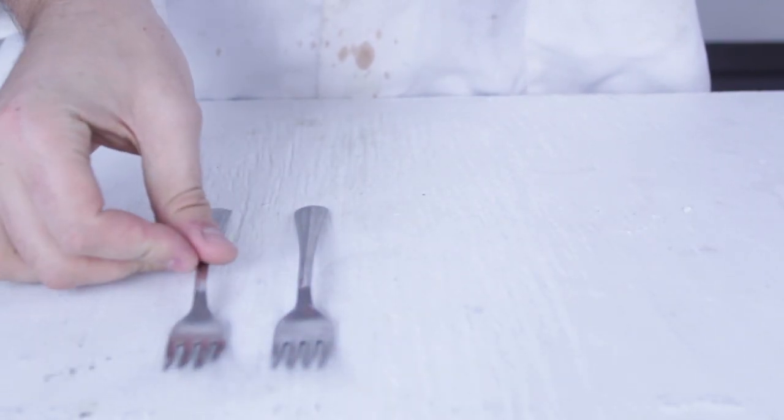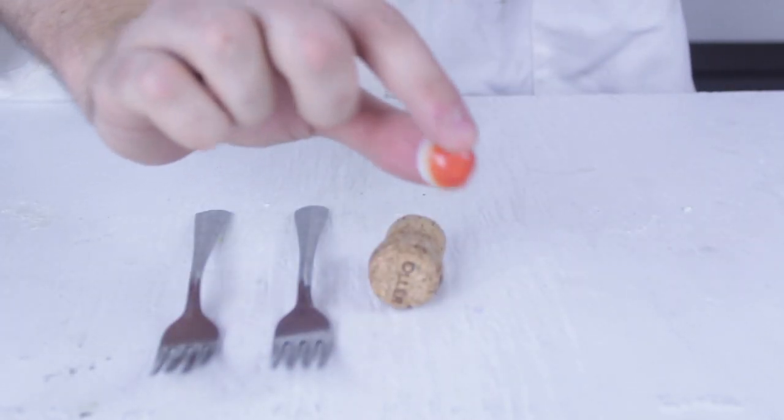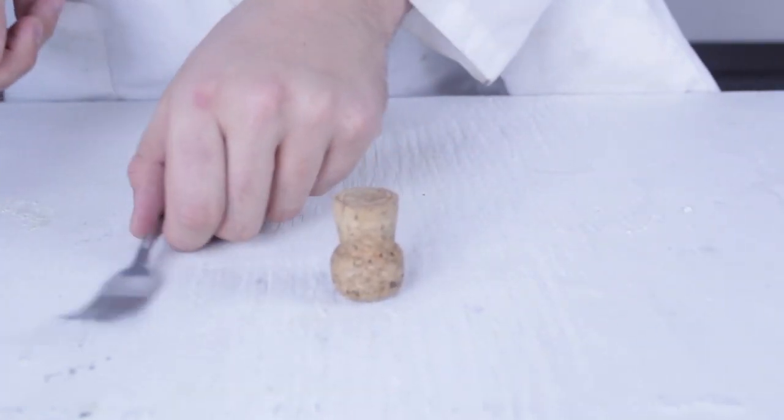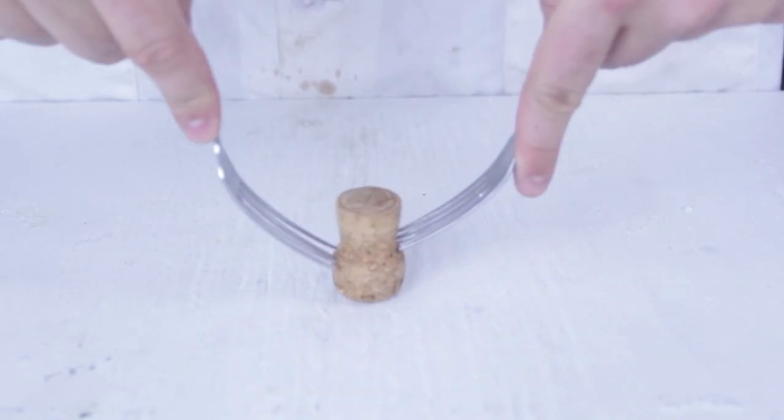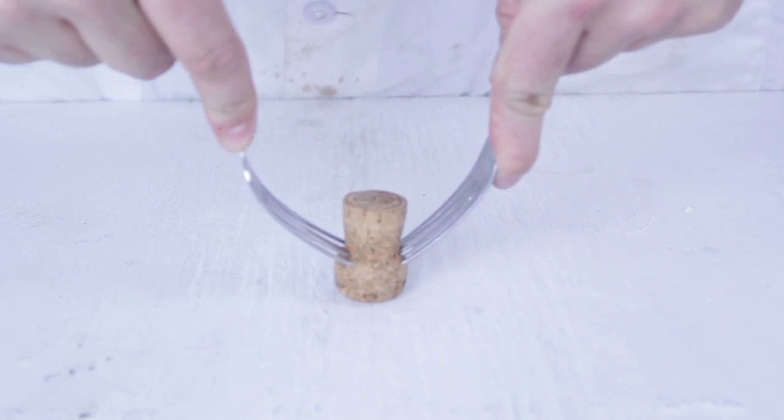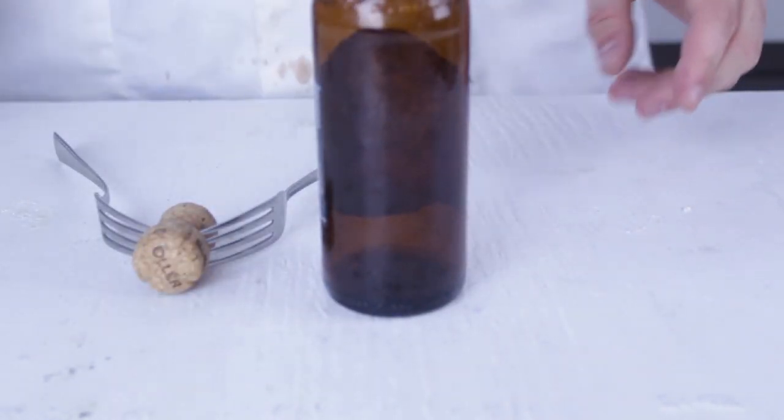For this experiment, we're gonna need two forks, a cork, marble, and a bottle. First thing we're going to do, grab a cork and stab these two forks right in the cork, like that. Then we're gonna bring the bottle up.